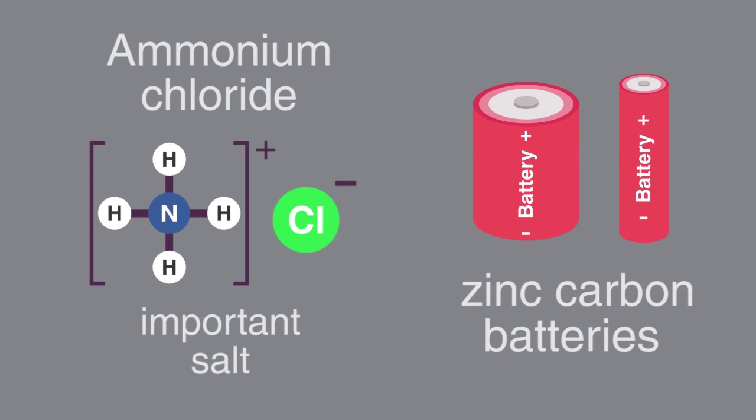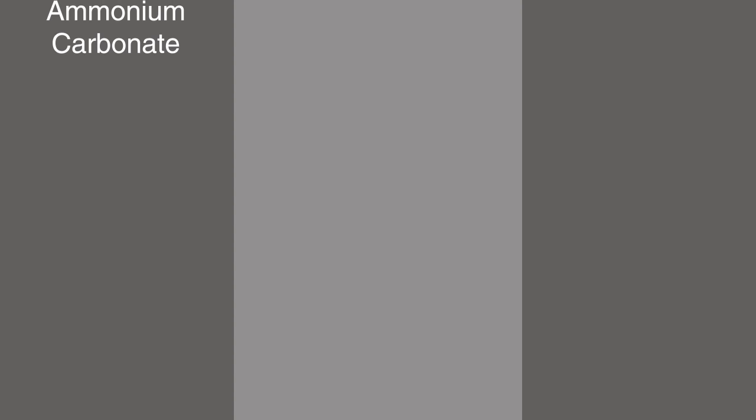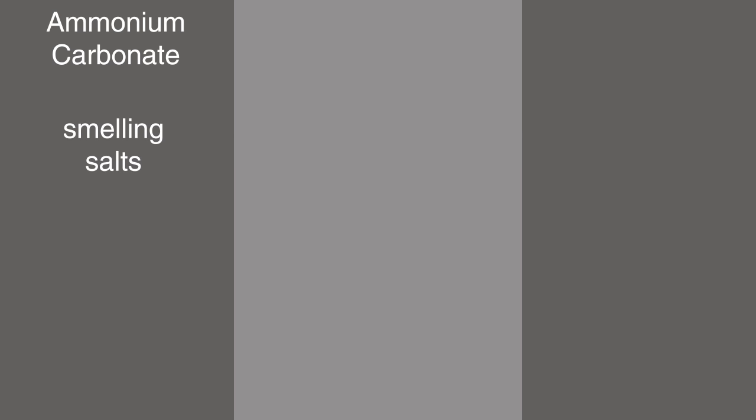Ammonium chloride is an important salt because it's a main component in zinc-carbon batteries. Now let's think about three other popular ammonium salts. Ammonium carbonate is an ingredient of smelling salts — not used much these days, but in the past people used to inhale their vapors when they felt faint.